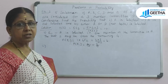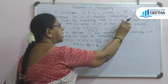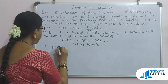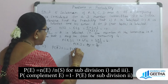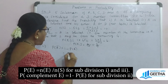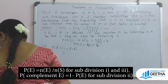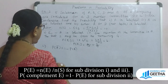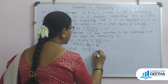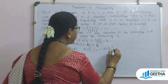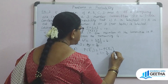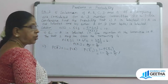For subdivision 2, find the probability that A is not selected. This is a complementary event. The probability of E1 complement equals 1 minus the probability of E1, which is 1 minus 3 by 5, giving 2 divided by 5.